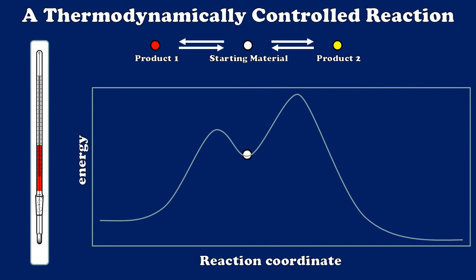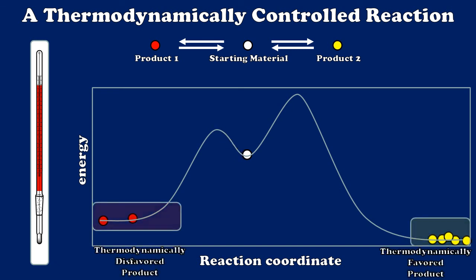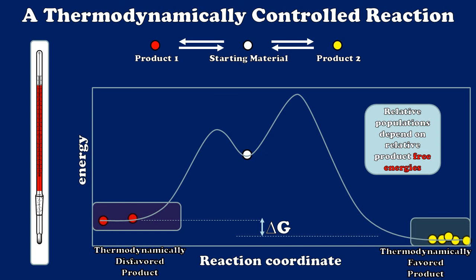Now let's go a step further and give the system a lot of thermal energy — so much that not only is the conversion of starting material to products relevant, but those products can also make their way back over the energy barriers to reform the starting material and sample the entire reaction coordinate again. By raising the temperature to this level, given enough time, it won't be the rates that dictate the relative populations anymore. Now it's the overall stability of the products. At the conclusion of my reaction, notice that I have more of the more stable product — that with the lower free energy — regardless of the fact that the less stable product formed faster. So under thermodynamically controlling conditions, it's not the difference in activation energy barriers which dictates the ratio of products, but rather the difference in the free energy of those products.